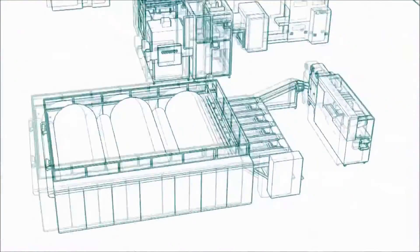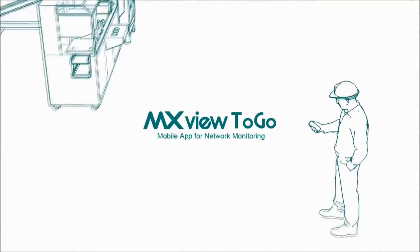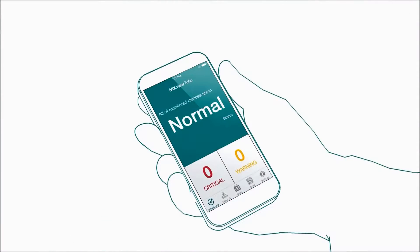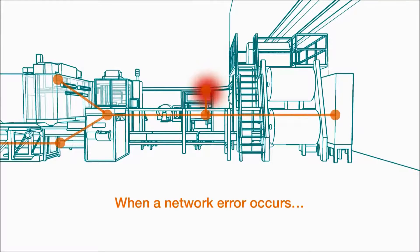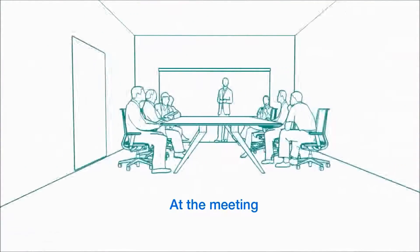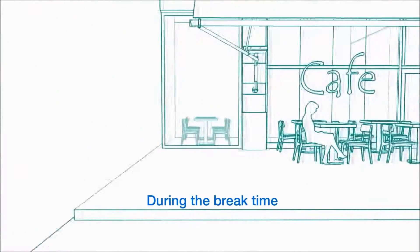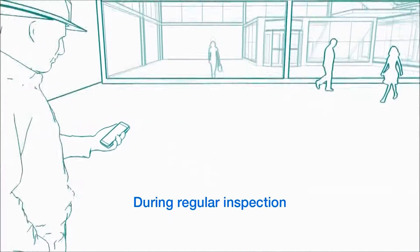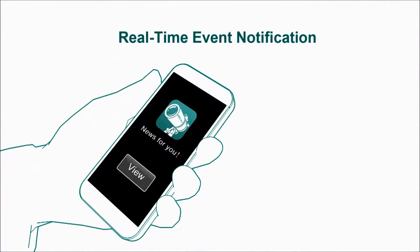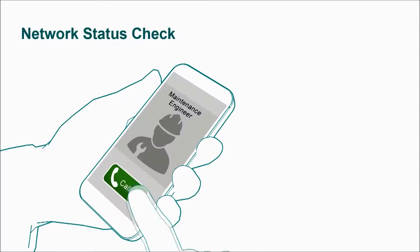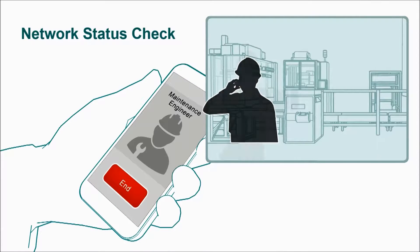But what about when you're out of the control room? With the new mobile app MXView2Go, you can access the network status anytime and anywhere. For example, let's say a network error occurs and you don't happen to be sitting in front of your control room monitors. Instead, you are in a meeting, on a break, or even out on a regular inspection. Your phone will let you know that something is wrong and you can check the app for details. You can even contact someone through the app for immediate on-site attention and troubleshooting.